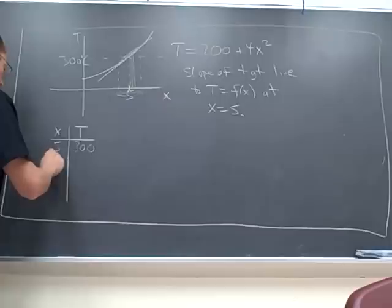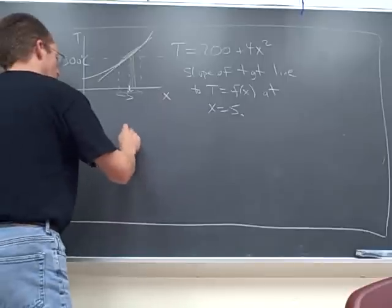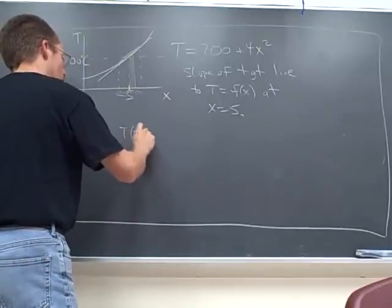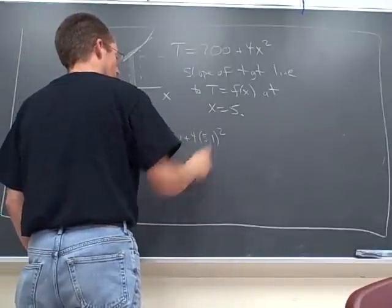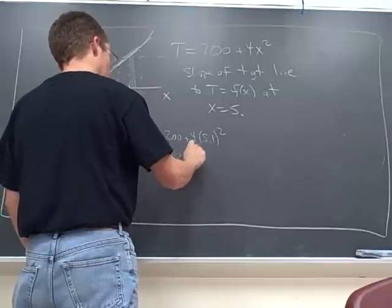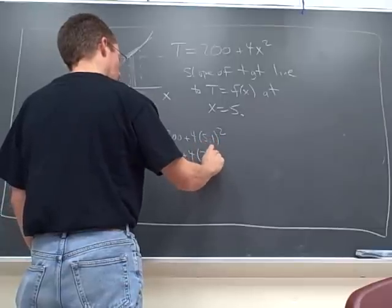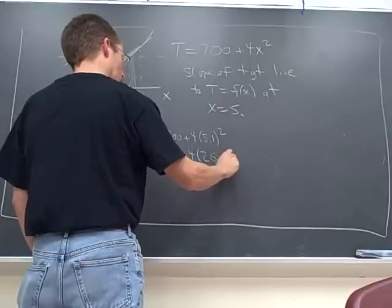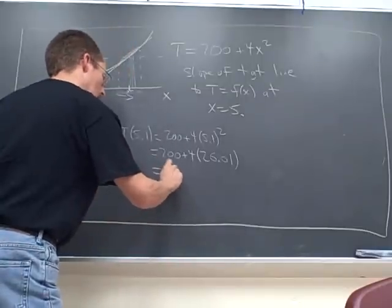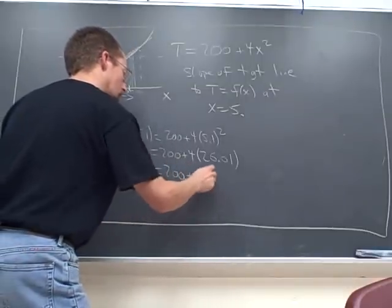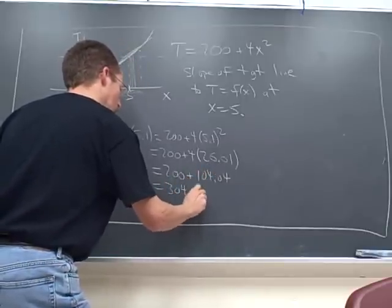And then let's say 5.1 gets us T of 5.1 is 200 plus 4 times 5.1 squared, which is 200 plus 4 times 26.01. That's 200 plus 104.04 or 304.04.